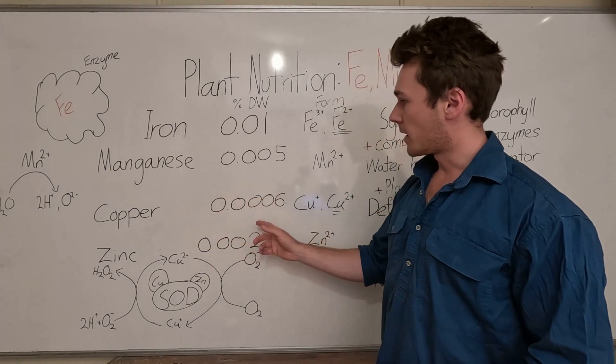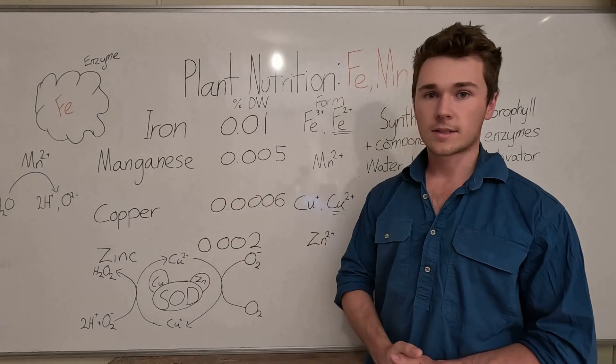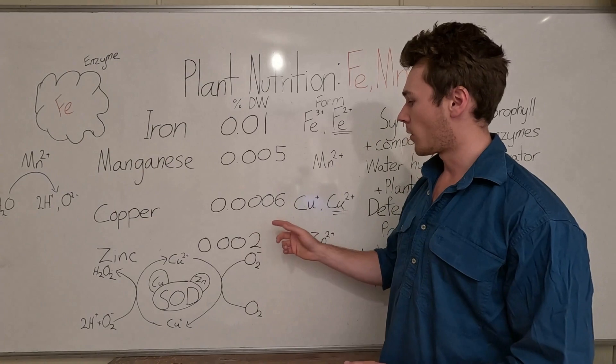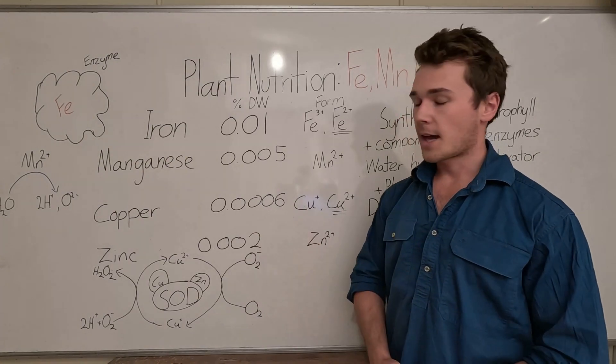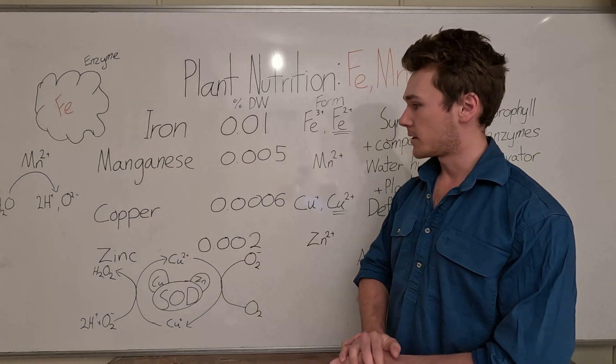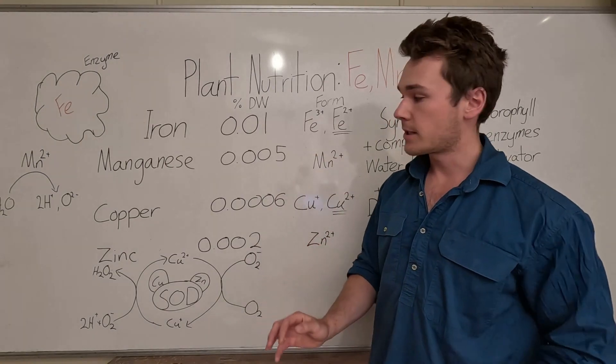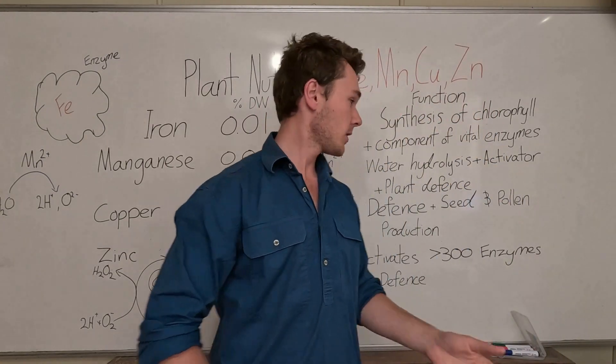Next is copper, similar actually used to a lesser extent than manganese, 0.0006% of our plant dry weight material. That's very small, you don't need much but it's very very important to our plants functioning.